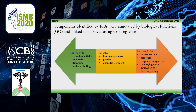Components identified by ICA were annotated by biological functions and linked to survival using Cox regression. We saw that better survival was associated with normal pancreas activity. It is very interesting that immune response showed no effect on survival. Finally, such functions as keratinization, cell cycle, hypoxia, and neoangiogenesis were linked to a poor prognosis.